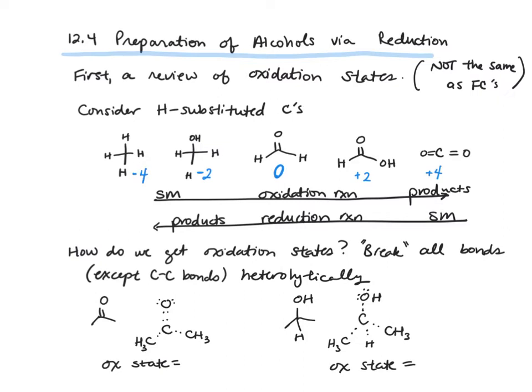If you are going from one of the molecules toward the left to something on the right, then you are accomplishing an oxidation reaction. Whereas if you're going from a starting material on the right to somewhere further to the left, then you have a reduction reaction. To determine oxidation states, we need to break all bonds heterolytically except for carbon-carbon bonds, and give electrons to the more electronegative atom.